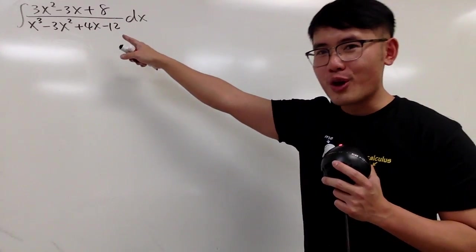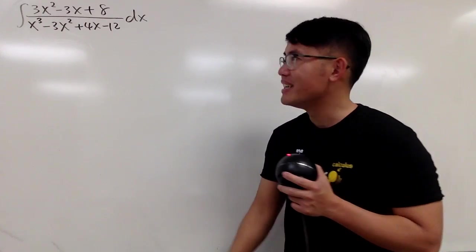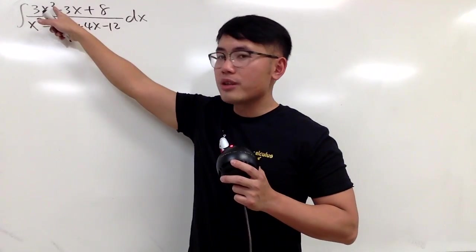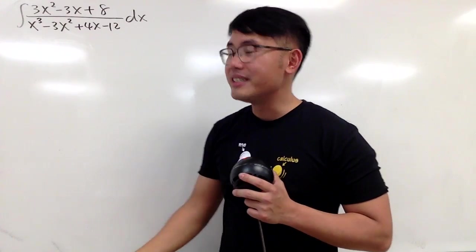Okay, as you can see, we have a rational function right here. Of course, to integrate this, let's try to use partial fraction. And of course, we have to make sure that the degree on the top is lower than the degree on the bottom. It is, so we can go ahead and proceed.